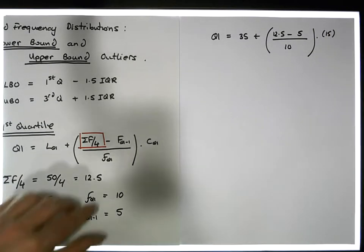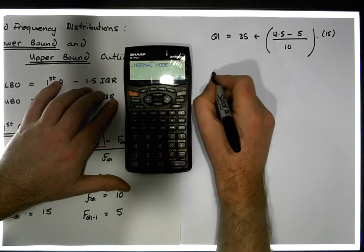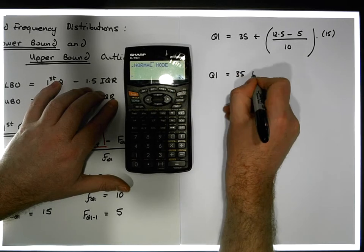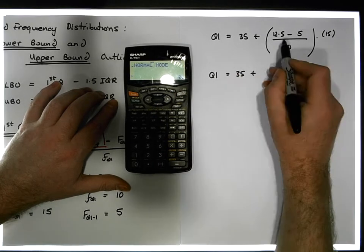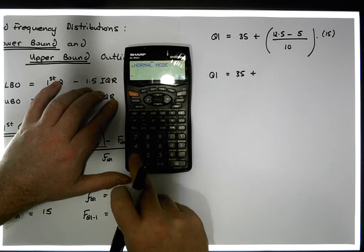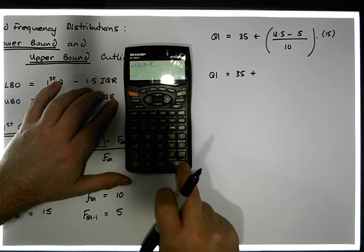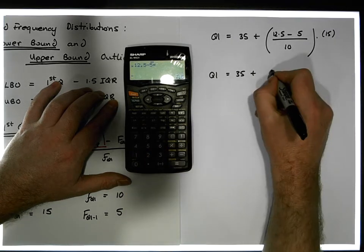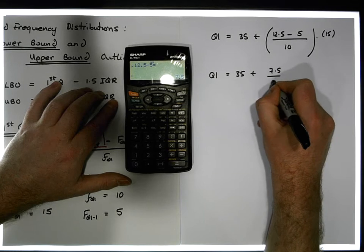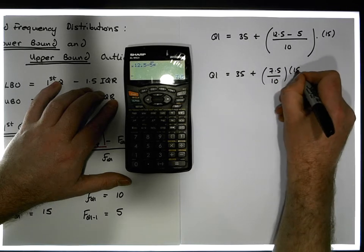So what we're really saying is that Q1, the first quartile, is equal to 25 plus — well, 12.5 minus 5 gives us a value of 7.5. So it's 7.5 over 10 times the width of the class.